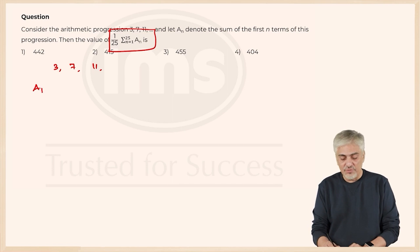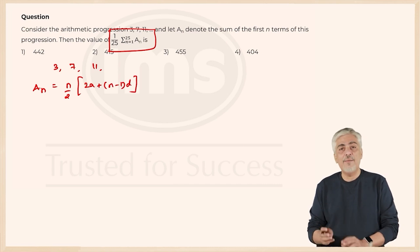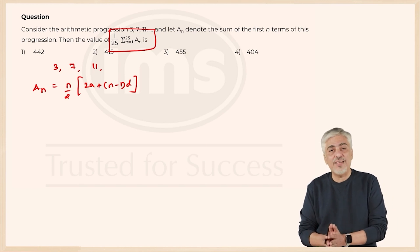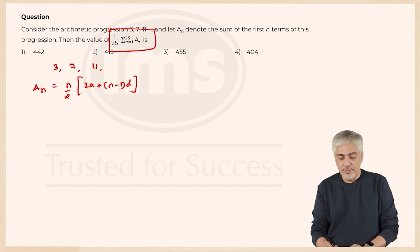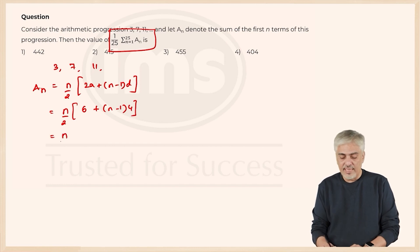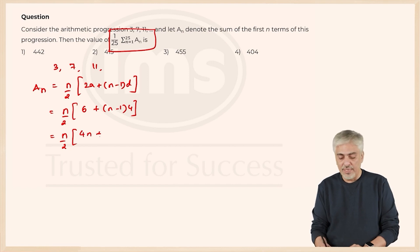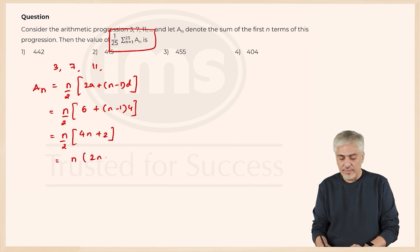First, let us find the formula for aₙ. The Sₙ formula is n/2 × (2a + (n−1)d). I am not finding a₂₅ because that's not what they asked — I am just finding aₙ. So it's n/2 × (2a = 6, plus (n−1) × 4), which gives n/2 × (4n − 4 + 6) = n/2 × (4n + 2). Taking 2 common, the 2 cancels, leaving n(2n + 1).